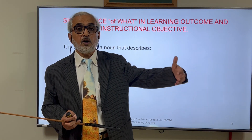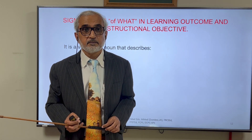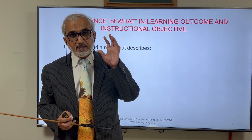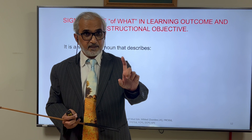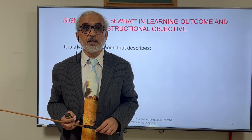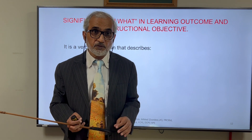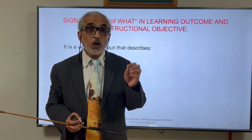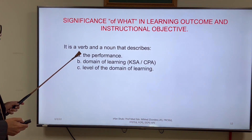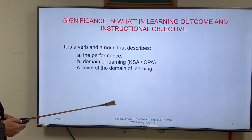The verb used also tells you whether it is a psychomotor domain, affective domain, or cognitive domain of learning — or more than one domain, which is usually the case — and what the percentage of each is. It is the verb and noun that describes the performance domain of learning and the level within that domain. This is the significance of writing a learning outcome or instructional objective statement — for example: 'By the end of this course, the students will be able to do this.'